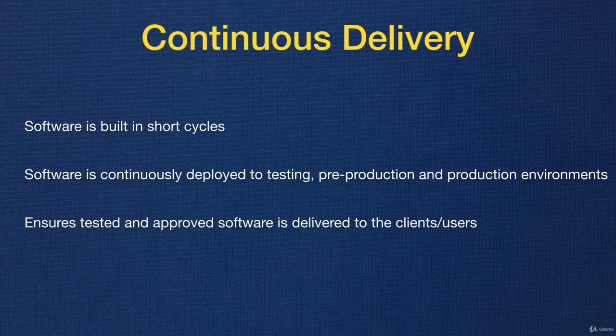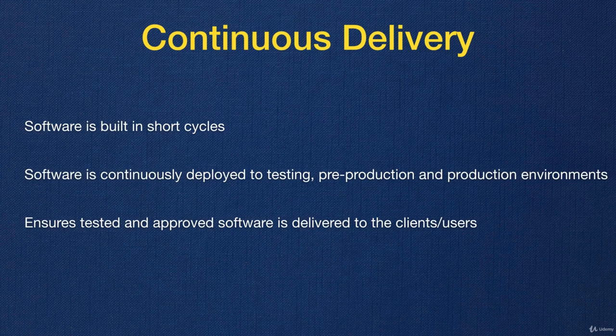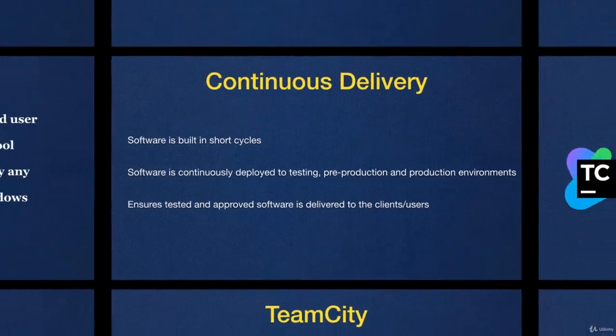Continuous delivery also ensures that only tested and approved packages get delivered to production. If we test a package, then make extra changes and redeploy, that testing becomes invalid. With continuous delivery, we make sure the package that gets tested is the same one that gets deployed — there is no change in between.